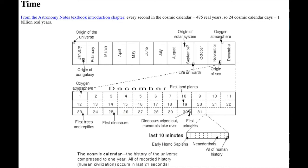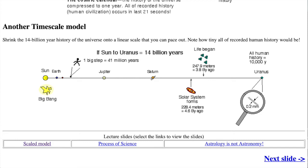Here's the cosmic calendar from the first chapter in the Astronomy Notes textbook, where the entire 14-billion-year history of the universe is compressed down to a single year on our calendar. Our solar system doesn't form until about two-thirds of the way through the year in September, and modern humans aren't coming onto the scene until the last few minutes of the cosmic calendar year. We have not been around that long at all.